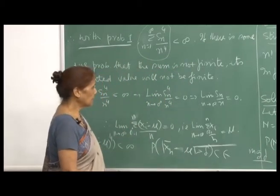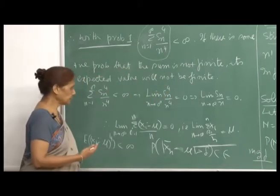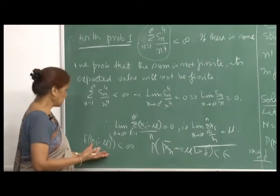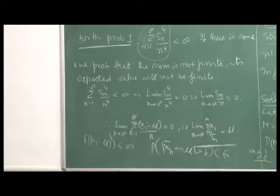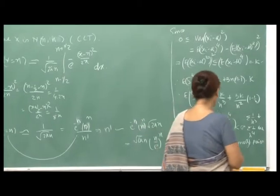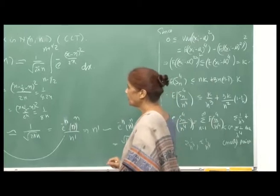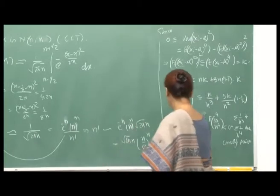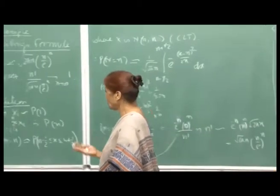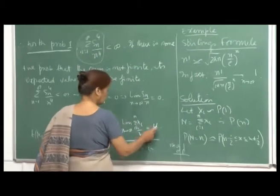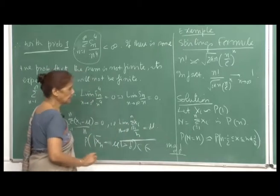Essentially, in the weak law of large numbers we said that the probability of |x_bar_n - mu| > delta goes to 0 — convergence only in probability. Here we are saying this is a sure event: x_bar_n must converge to mu as n → ∞ with probability 1.